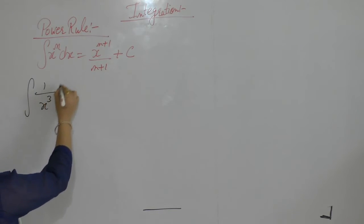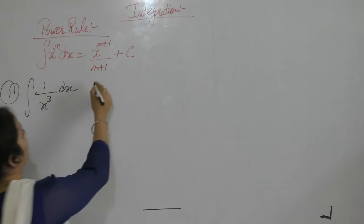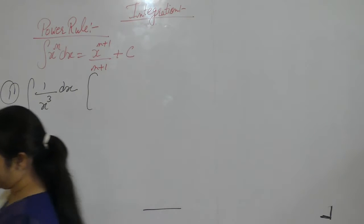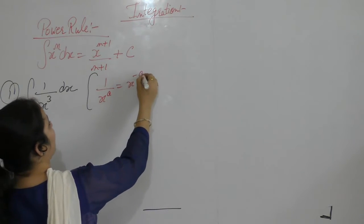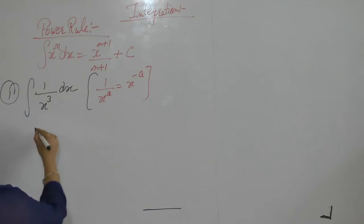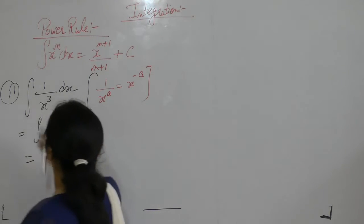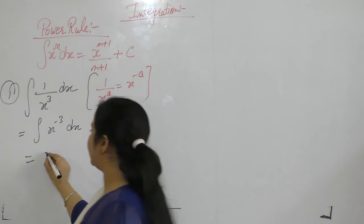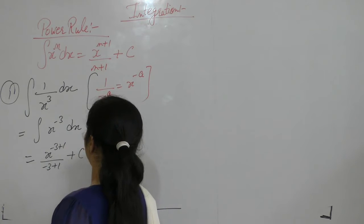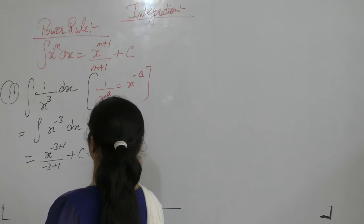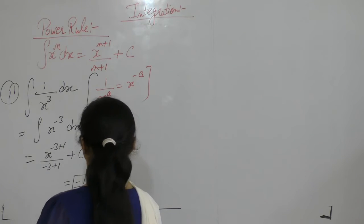Example 1: Integral of 1/x³ dx. We can write 1/x^a as x^(-a), so this becomes integral of x^(-3) dx. Applying the power rule with n = -3: x^(-3+1) / (-3+1) = x^(-2) / (-2) + C, which equals -1/(2x²) + C.